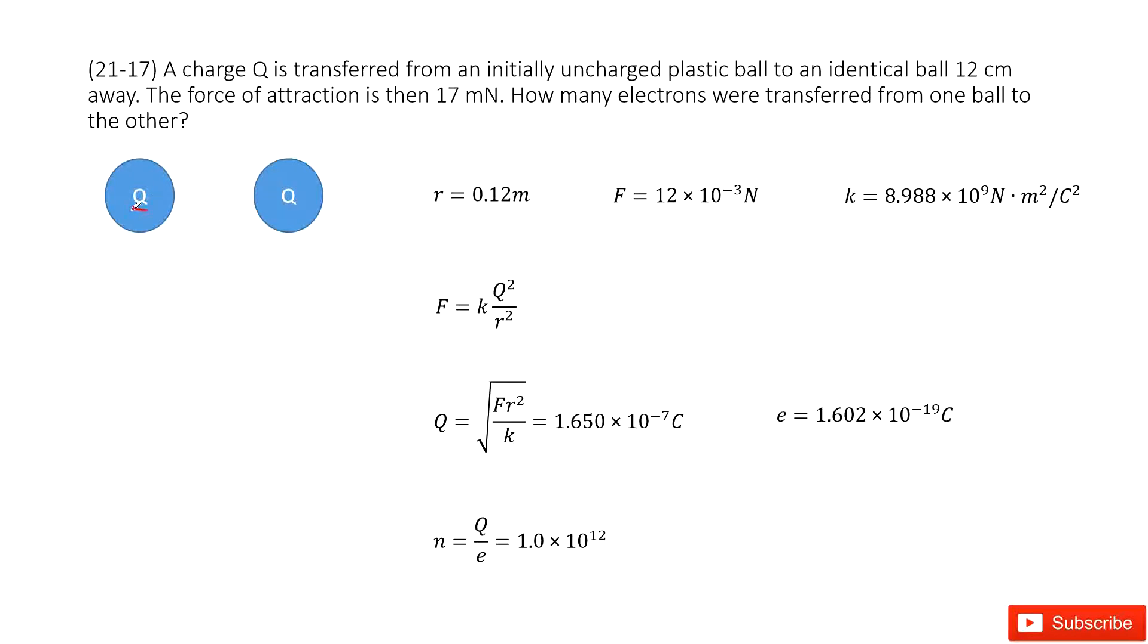So we write down the known quantities. First one we know the distance is fixed, R is given. And the force is given 12 millinewtons. And the K is a constant.